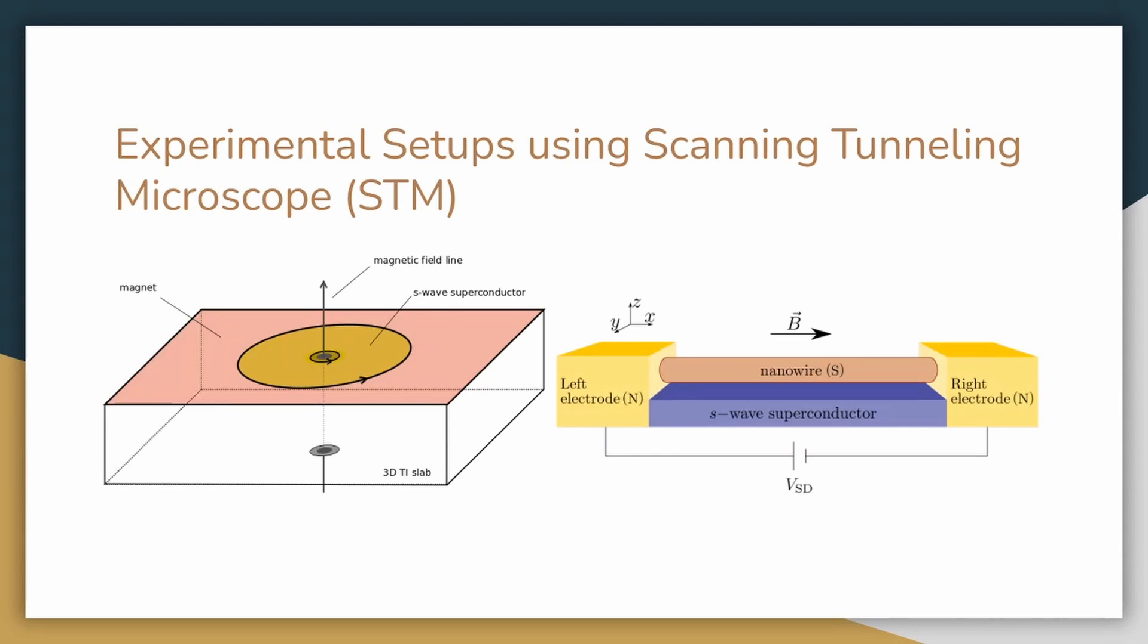In both methods, the STM moves towards the point that we expect to find MZMs and then electrons can tunnel more easily through them. We can detect this electron tunneling as current through the sample. The electrons can do this because the zero energy state of the MZMs act as a stepping stone towards the ground and therefore closing the circuit.